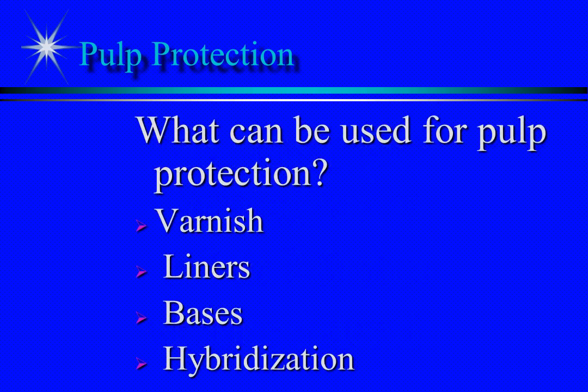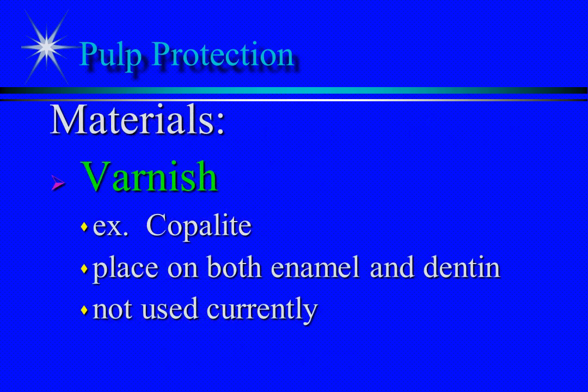Several types of materials have been used for pulp protection and may fall into one or more groups. Varnishes have been used extensively in the past but are not currently recommended. One example is Copalite varnish, which was applied in multiple coats on both enamel and dentin.